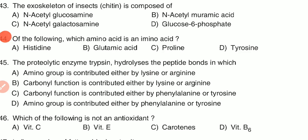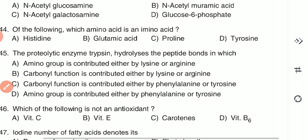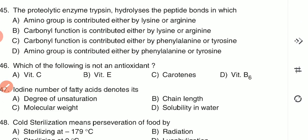Question 45: The proteolytic enzyme trypsin hydrolyzes the peptide bonds in which — (A) the amino group is contributed either by lysine or arginine, (B) carbonyl function is contributed either by lysine or arginine, (C) carbonyl function is contributed either by phenylalanine or tyrosine, or (D) amino group is contributed either by phenylalanine or tyrosine. The answer is B — carbonyl function contributed by lysine or arginine.